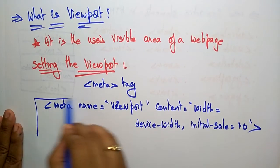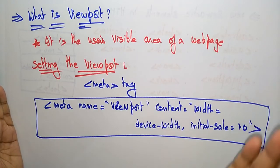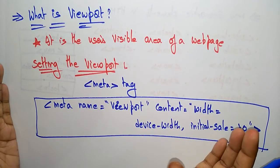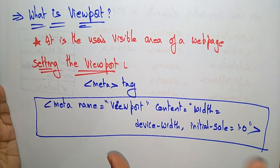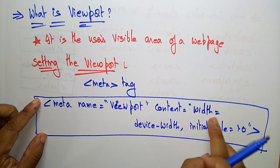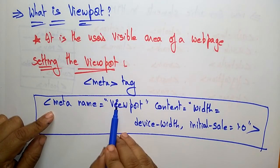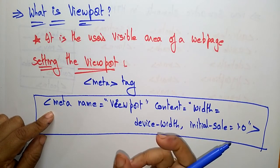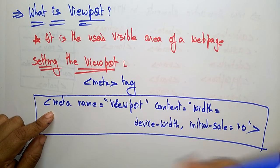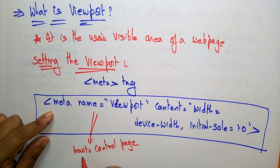This meta tag is written in the head section of your HTML document. So whatever HTML document you are writing, you include this statement — meta name viewport, content equals width equals device-width, initial-scale equals 1.0 — in the head section. The meta name viewport element gives the browser instructions on how to control the page dimensions and scaling.